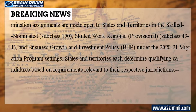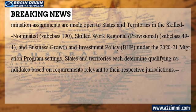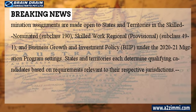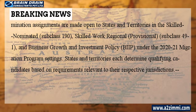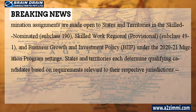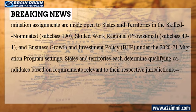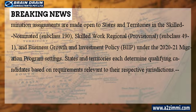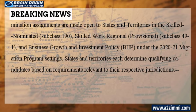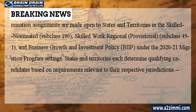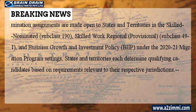These include the Skilled Nominated subclass 190, Skilled Work Regional Provisional subclass 491, and Business Innovation and Investment Program (BIIP). Under the 2020 to 2021 migration program settings, states and territories each determine qualifying candidates based on requirements relevant to their respective jurisdictions.